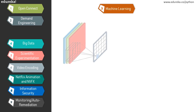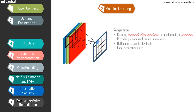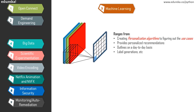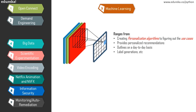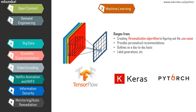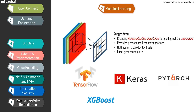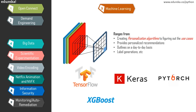Machine learning at Netflix ranges from creating personalization algorithms to figuring out various use cases. Personalization algorithms help train machine learning models per the Netflix standard, providing personalized recommendations and label generation on a day-to-day basis. The libraries used for deep neural networks are TensorFlow, Keras, and PyTorch, while XGBoost and LightGBM are used for gradient boosted decision trees. Netflix has also developed higher-level libraries for feature logging, feature extraction, and publishing, and makes use of Metaflow to create machine learning projects.